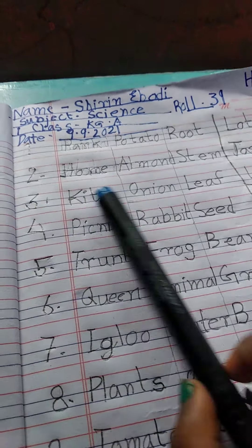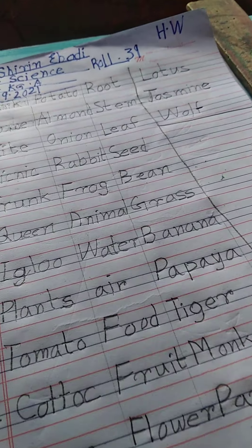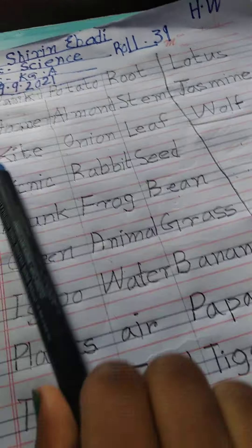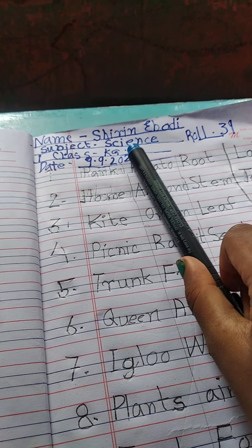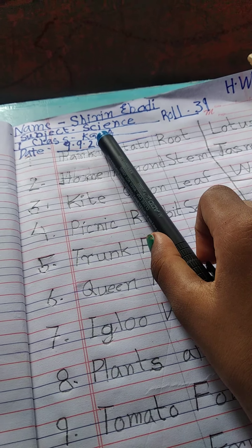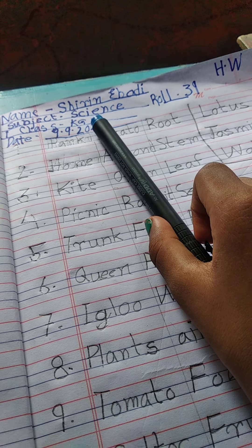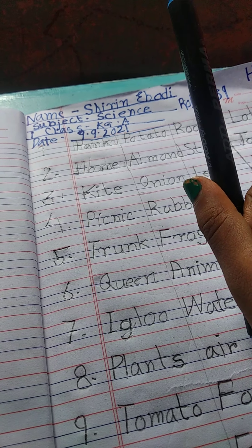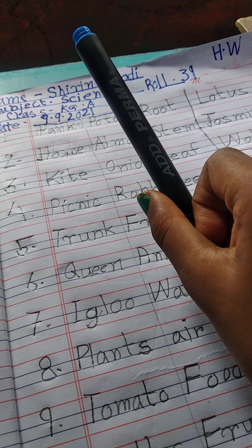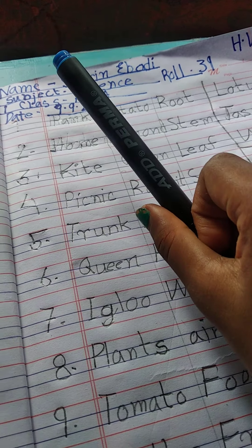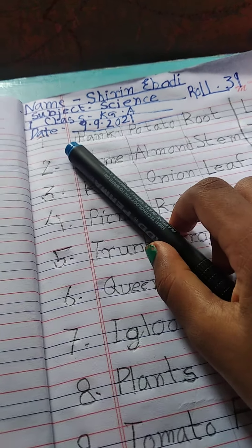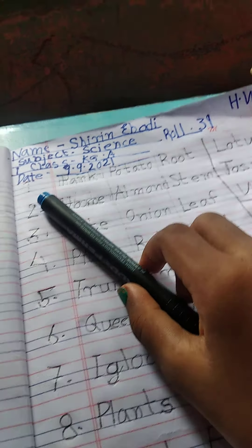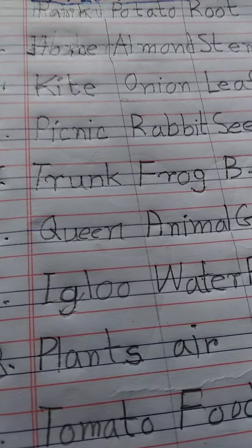Today's spelling. More spellings. Name, clash word, homework, subject science, and class KGA, date 9.9.2021. Now, explain. Start.